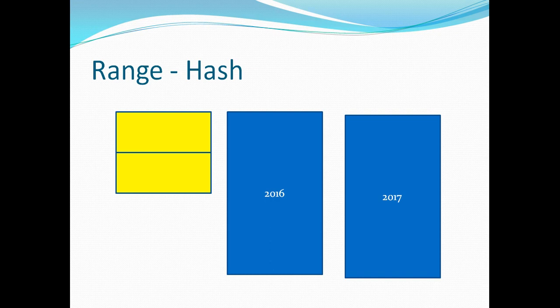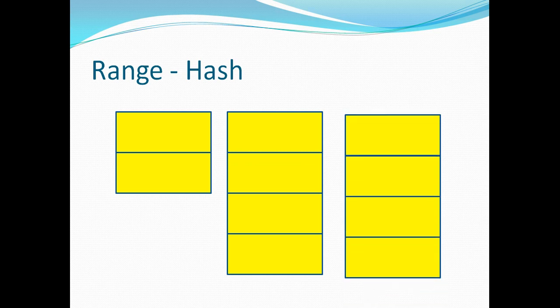We've done range partitioning, creating ranges for three years on our transaction table: 2015, 2016, and 2017. For 2015 we only created two sub-partitions, while for 2016 and 2017 we created four. If a table is too large for one partition strategy, you can use a composite partition strategy — first divide by range for three years, then further distribute using hash partitioning. You don't have to create an equal number of sub-partitions for all partitions.